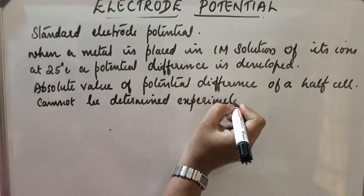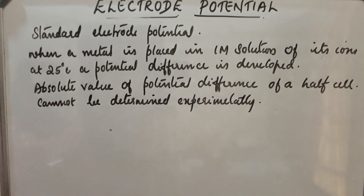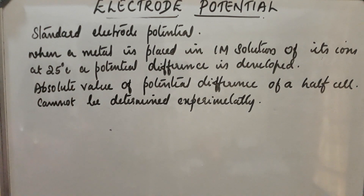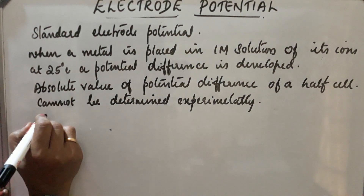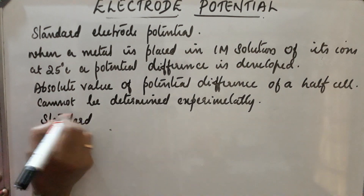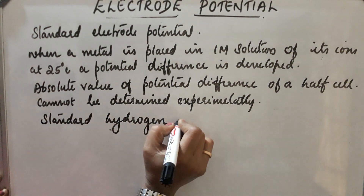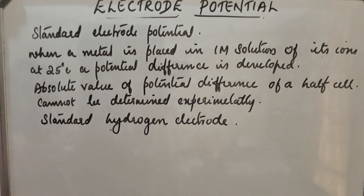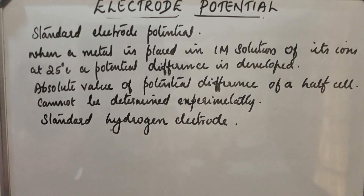So in order to obtain the potential difference, electrode potentials are determined with respect to a standard hydrogen electrode, which has a standard electrode potential of zero. By connecting the half cell with the standard hydrogen electrode, the potential difference of a particular half-cell electrode can be determined.